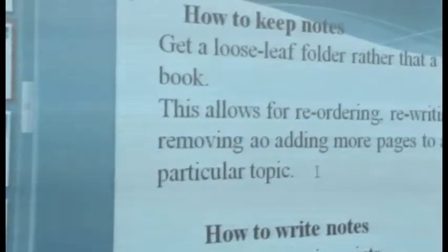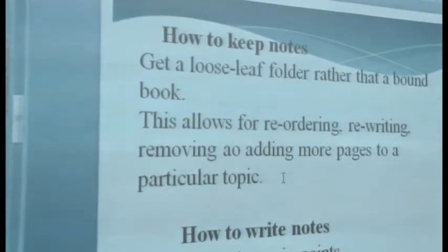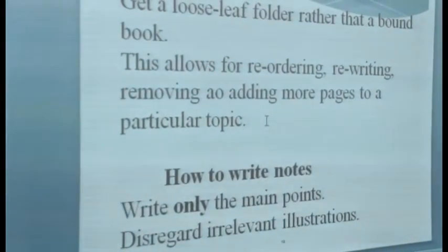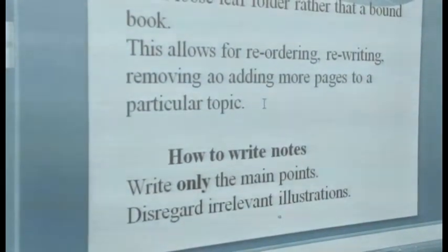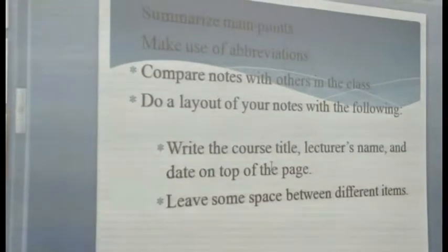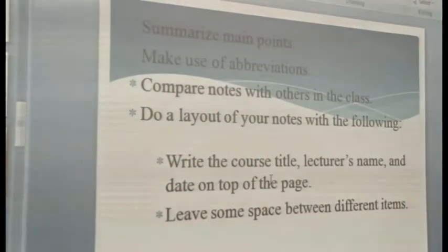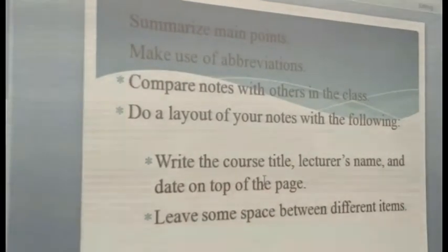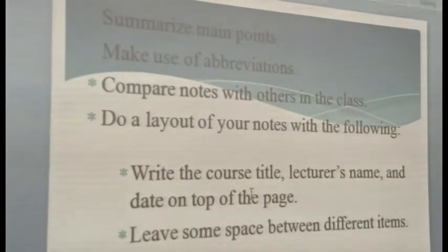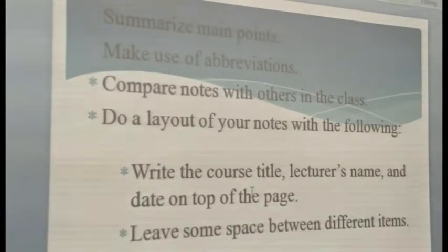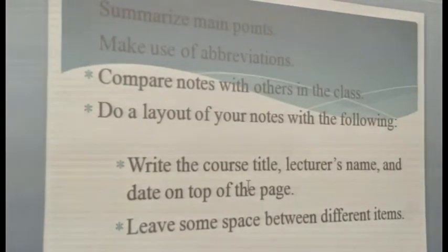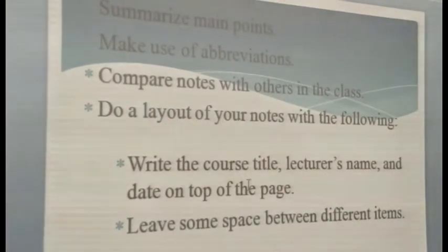How do we write notes? You must take only the main points from what is being said by the lecturer. You may want to disregard irrelevant illustrations. Summarize main points — as the lecturer talks, you listen attentively and jot down what is germane to the topic being discussed. To make it faster, make use of abbreviations. Instead of writing out a whole sentence, write the short forms to have more time to note as many points as possible.